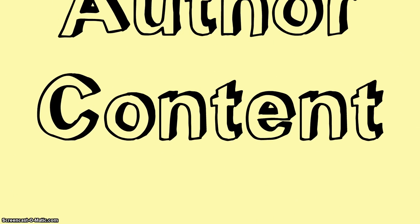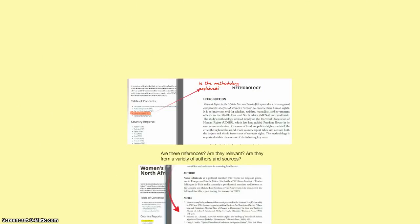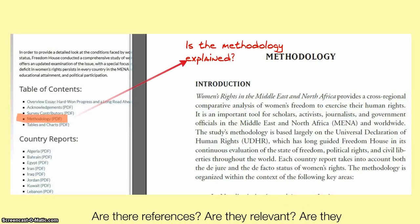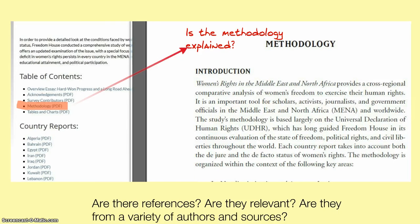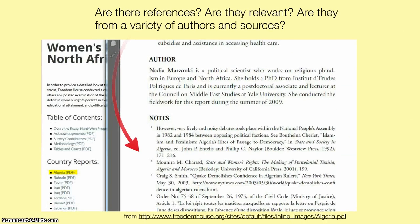The next criteria is the content. What information do we find on the website? Are there references? Are they relevant? Are there a variety of authors and resources, or is it just one person's opinion?